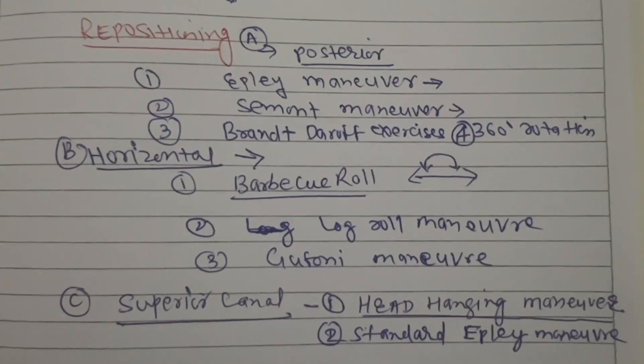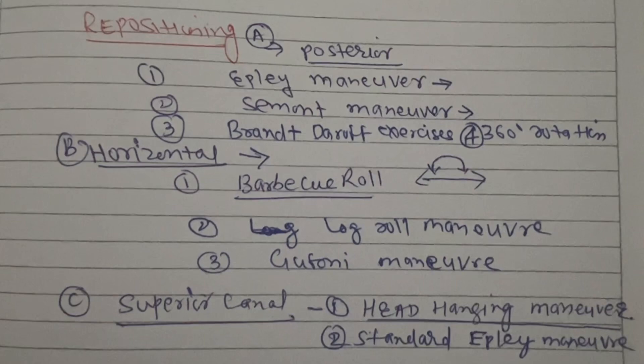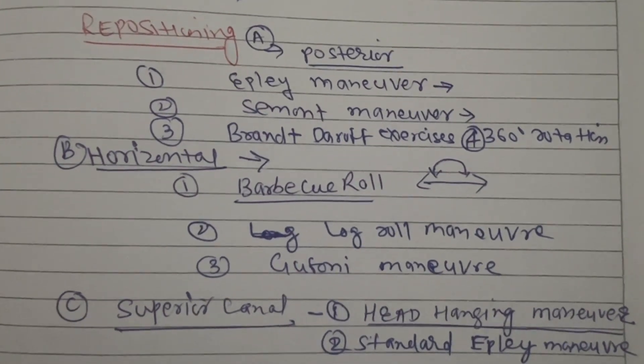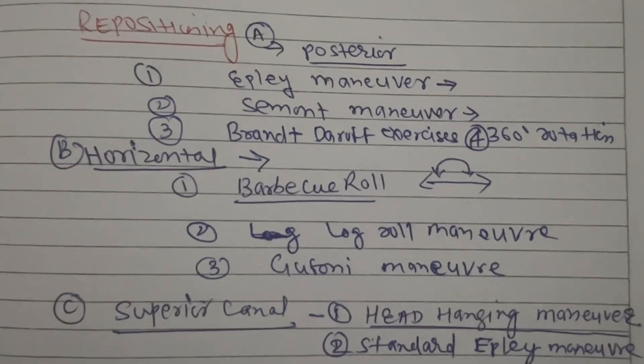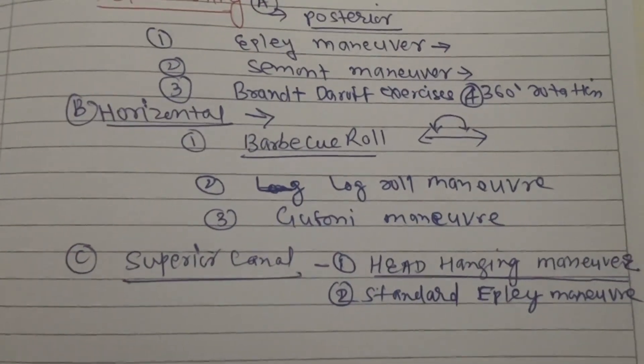For horizontal semicircular canal there is the Barbecue roll (272 degrees), ear rotation 360 degrees, and the Gufoni maneuver. For superior semicircular canal you can use the Epley maneuver, head rolling maneuver, or head hanging maneuver. The maneuvers for superior and posterior semicircular canals are similar because the right anterior canal is in the plane of the left posterior semicircular canal, and the left anterior is in the plane of the right posterior semicircular canal.